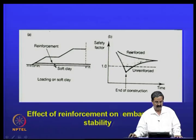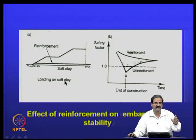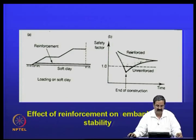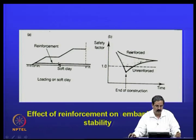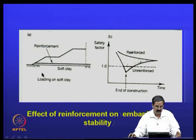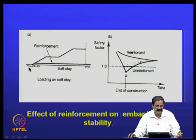If pore pressures are going very high, there is a simple equation C_U/P = 0.3 which shows that P is the effective stress you need to apply. From the available undrained shear strength, one can calculate how much effective stress is required and construct slowly. But when the rate of construction needs to be fast, undrained conditions and low effective stress can bring the factor of safety below 1. To avoid that, the best solution is to place a reinforcement.